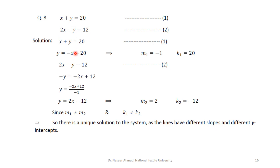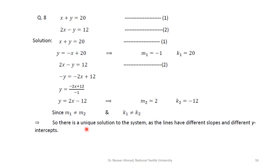For question 8, x plus y equals 20 gives y equals minus x plus 20, so m1 equals minus 1 and k1 equals 20. Equation 2: 2x minus y equals 12 gives y equals 2x minus 12, so m2 equals 2 and k2 equals minus 12. Since m1 and m2 are different, this is sufficient to declare the solution is unique.